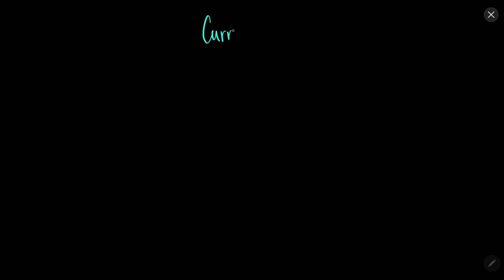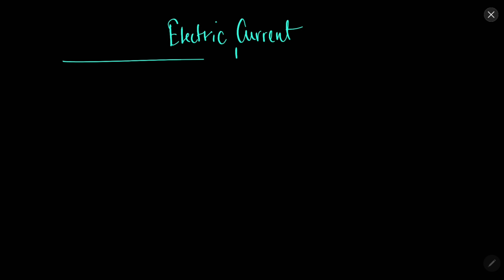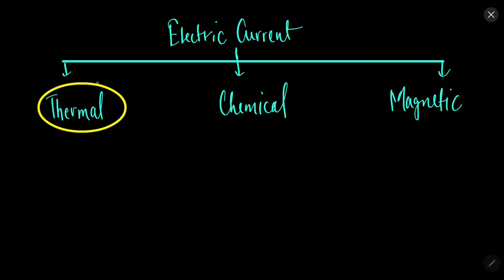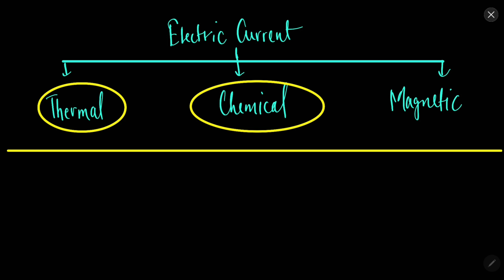We will discuss about some of the effects shown by electric current. Electric current shows three main effects: one is the thermal effect, one is the chemical effect, and the third is the magnetic effect of current. We will be discussing the thermal effect and the chemical effect in this particular chapter. The magnetic effect will be dealt with separately because it is a very big topic in itself.